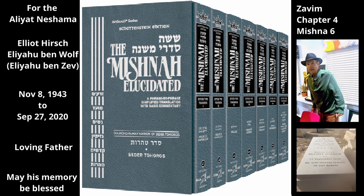Now we turn to the words of the Mishnah. If a Zav is on one pan of a balanced scale and food or drink is on the second pan on the other side of the scale, the food or drink is Tameh from the Hesed of the Zav, whether the Zav weighs down his side of the scale or they weigh down their side.